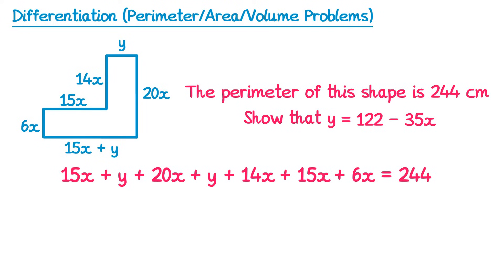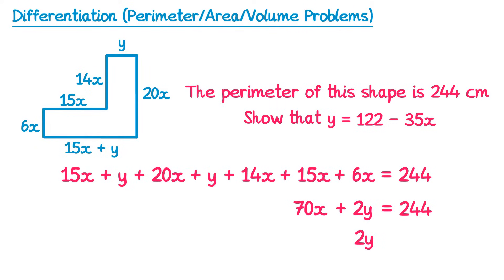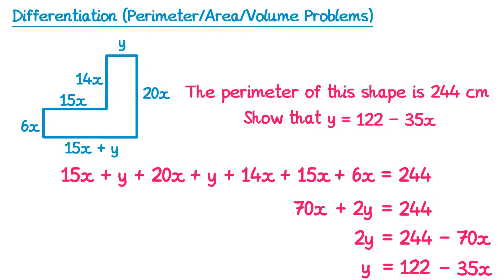If we now do some simplifying: we've got 15x, 20x, 14x, 15x and 6x — add up all of those and you get 70x — and then we've also got some y terms, we've got y add y which gets you plus 2y, and this equals 244. If you now subtract 70x from both sides, on the left you get 2y and on the right 244 minus 70x, and now if you divide both sides by 2, on the left you get y and on the right you get 122 take away 35x, which is what we were asked to show.